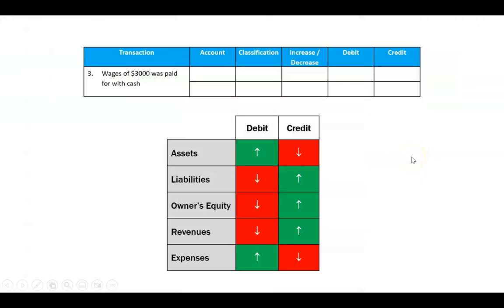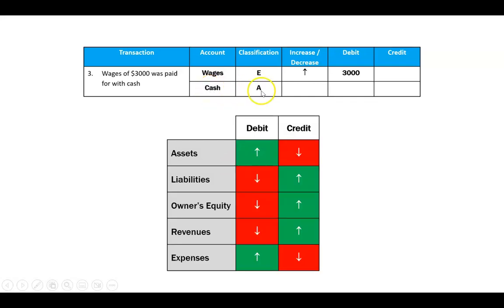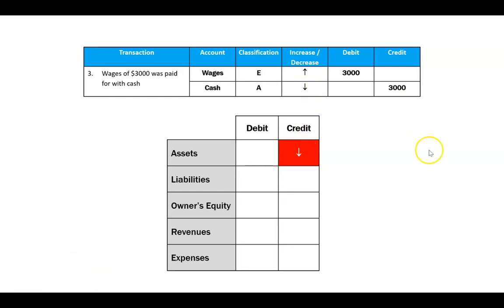Let's deal with a basic expense: wages of $3,000 paid in cash. Wages are an expense that's increasing — the rule says an expense increasing is a debit. We gave up cash, which is an asset decreasing — the rule says when an asset goes down that's a credit of $3,000. We can now process any revenue or expense using our rules of debits and credits, and remember that selling goods also requires recording cost of sales.